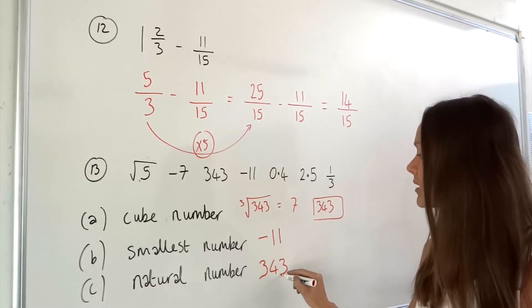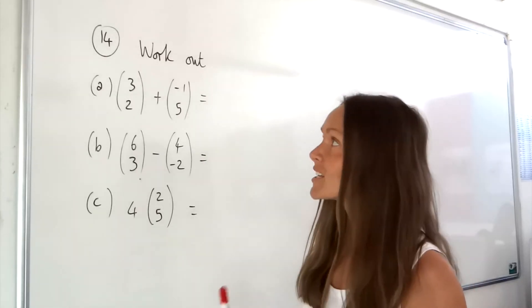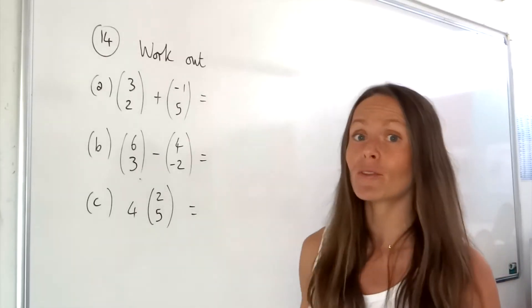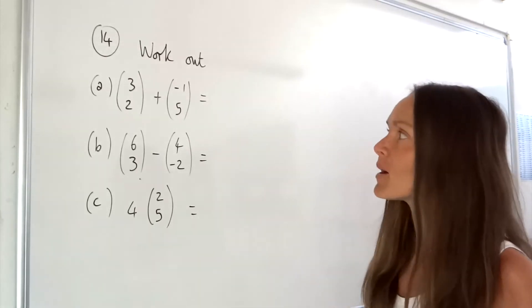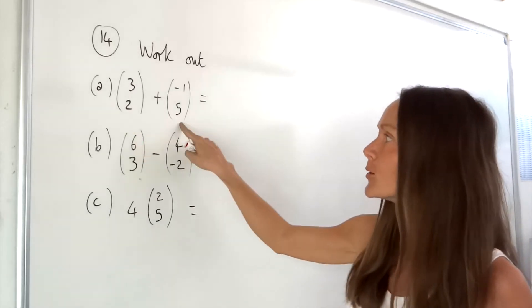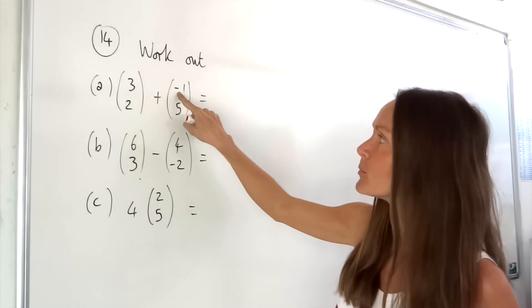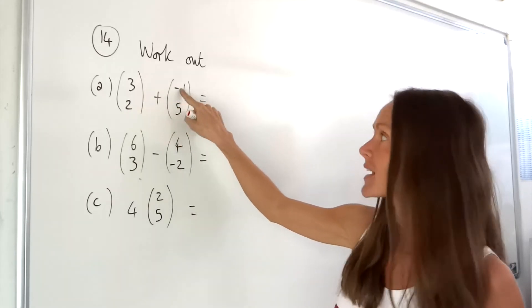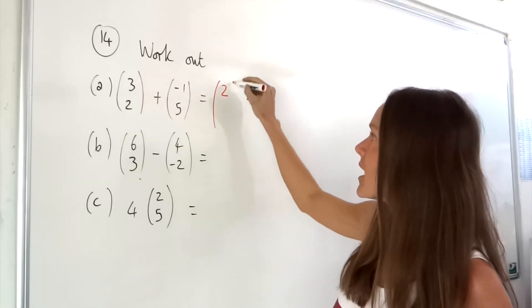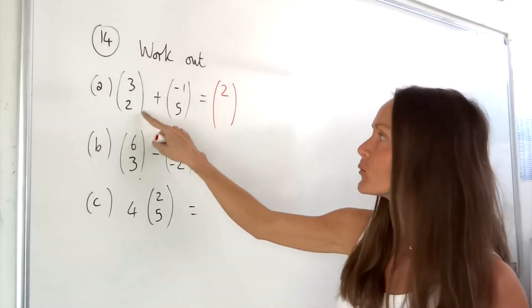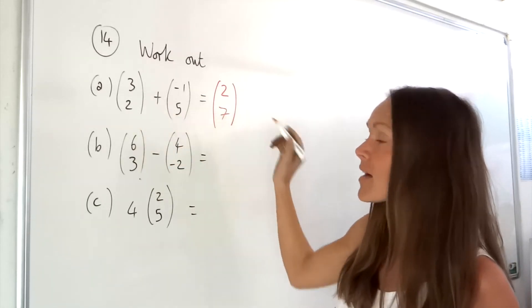In number 14 we've got a few column vector questions. In part a we have to add the two column vectors together. All you need to do is add the top two numbers, so three plus negative one is two, and then add the bottom numbers, so two plus five is seven and that one's done.